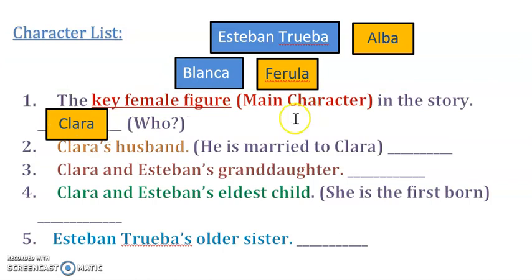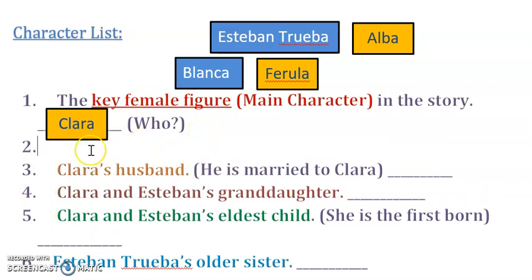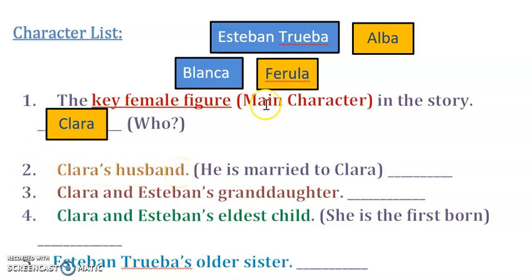Her name is Clara. Number two: Clara's husband — who among these characters is Clara's husband? Is it Esteban Truba, Alba, or Ferula?